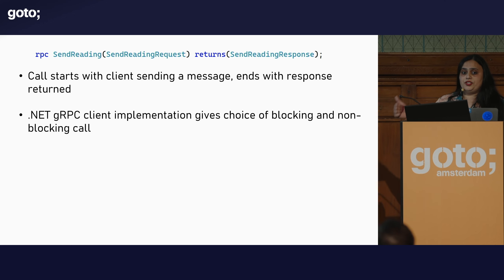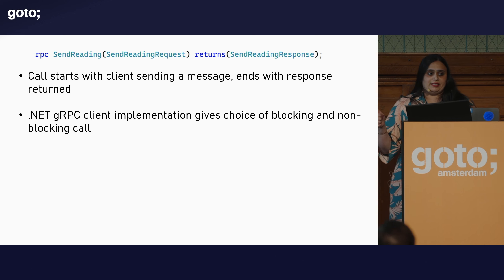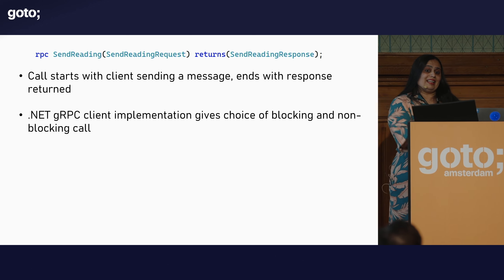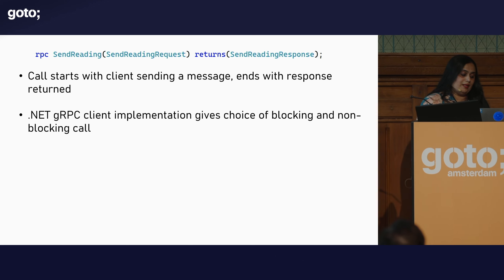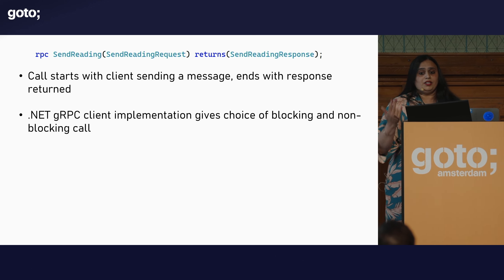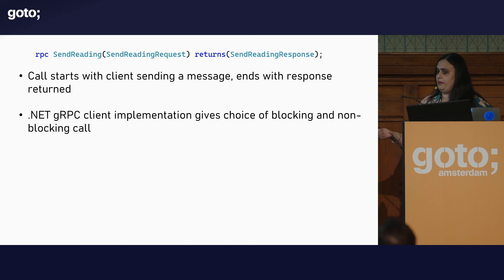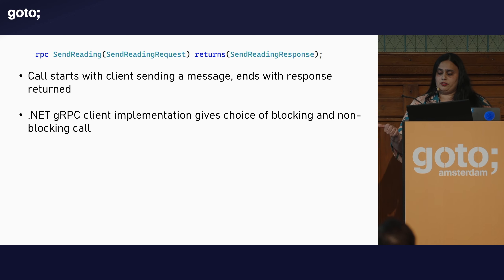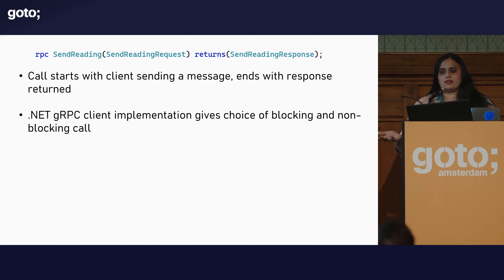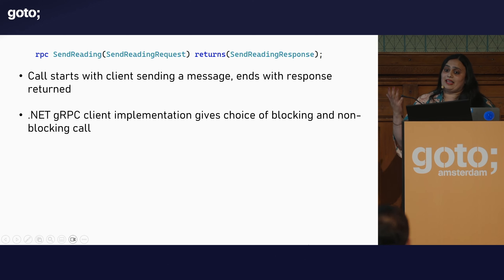With the .NET gRPC implementation on the client side, when the stub methods are generated, you get access to two different stub methods: one asynchronous non-blocking call and one synchronous blocking call. If you want access to the response headers, you need to make use of the async version.